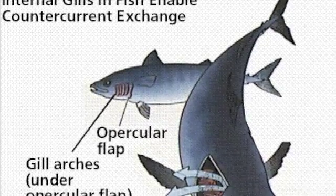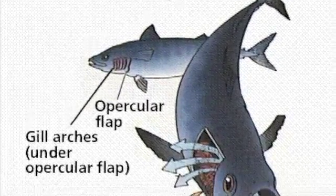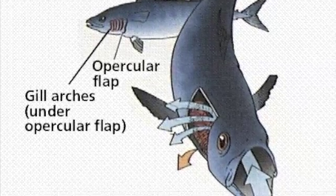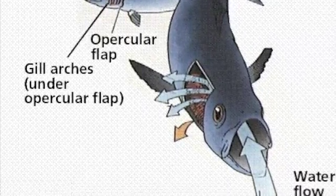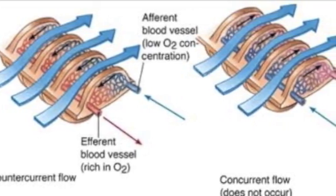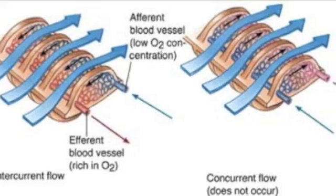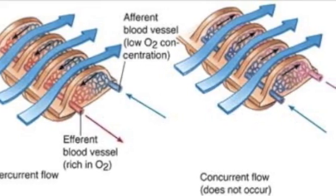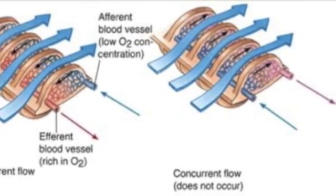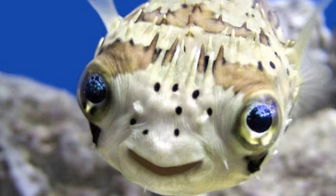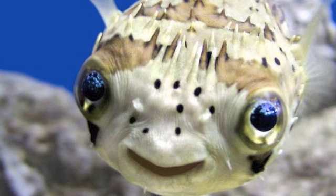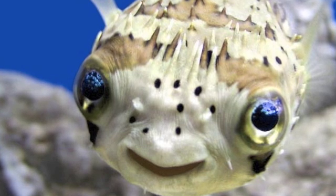Bony fish use counter current flow to maximize the intake of oxygen that can diffuse through the gill. Counter current flow occurs when deoxygenated blood moves through the gill in one direction, while oxygenated water moves through the gill in the opposite direction. This mechanism maintains the concentration gradient, thus increasing the efficiency of the respiration process.